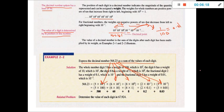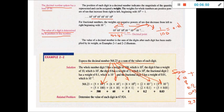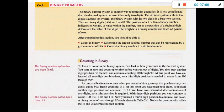So the result will be 500 plus 60 plus 8 plus 0.2 plus 0.03, and the summation is 568.23. Now let's go to a very important number system type: binary numbers. The computer language — all quantities inside the computer, meaning information such as video, audio, and images — are all expressed using binary numbers.